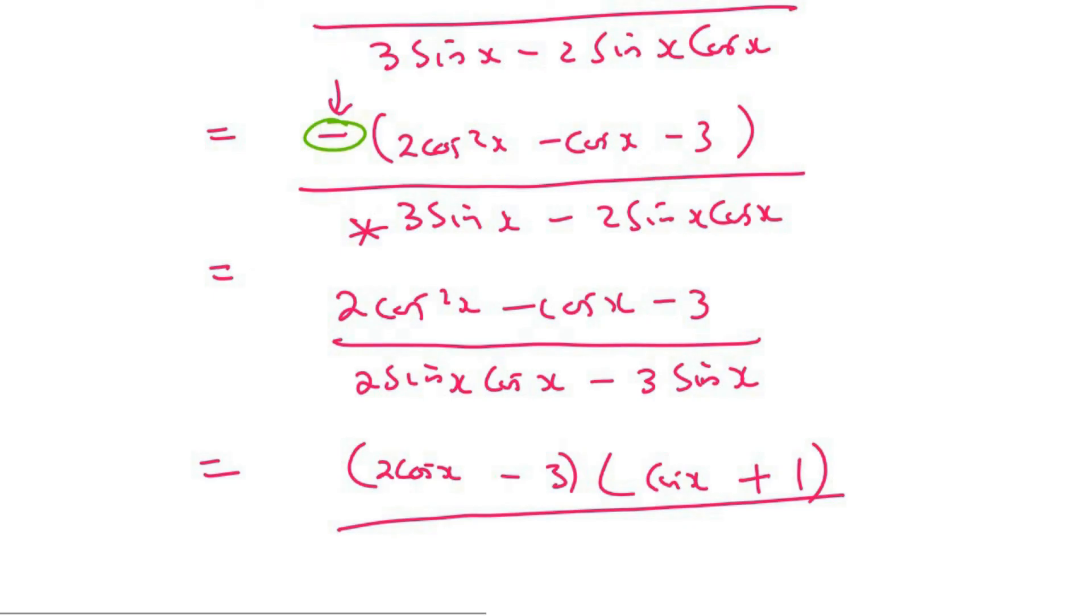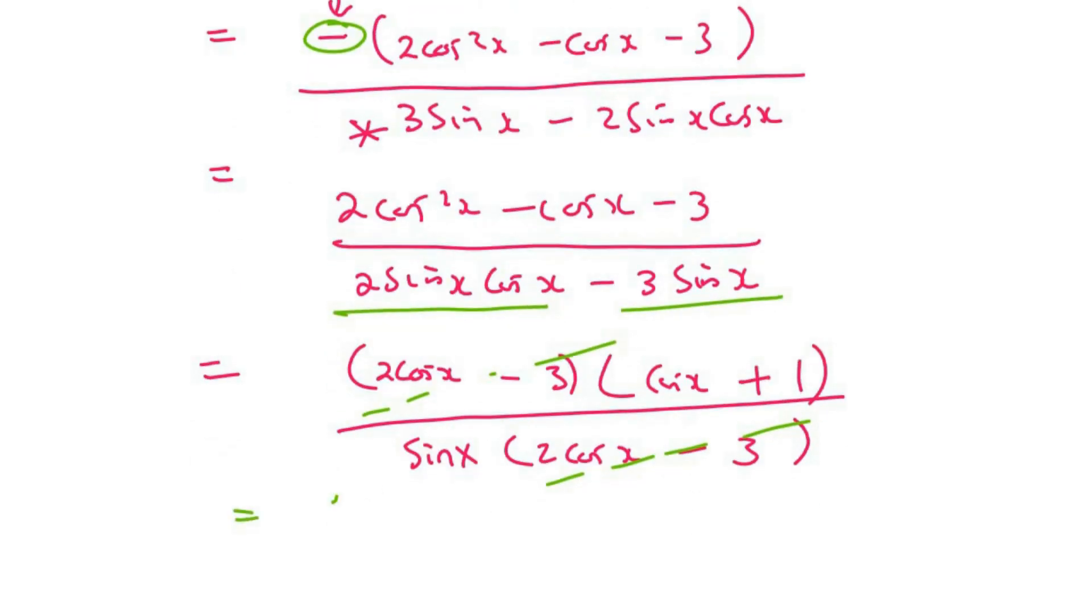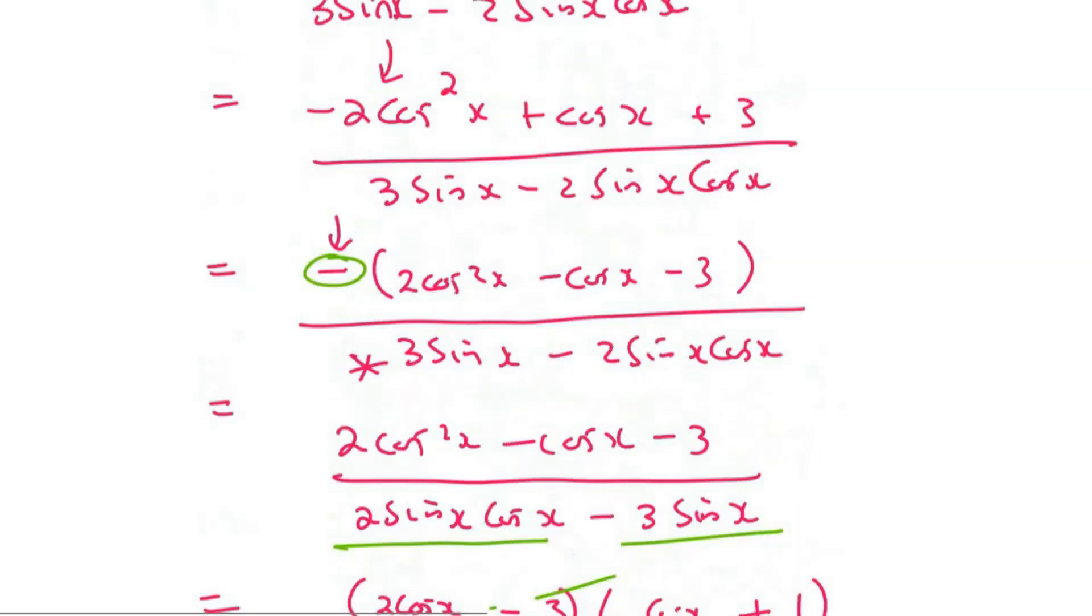Then at the bottom, there's a common factor. That common factor is sinx. And then we'd be left with 2 cosx minus 3. And then look at this. What happens is that that cancels, and that cancels. And so we're left with (cosx + 1) over sinx. And now we can say, therefore, left-hand side is the same as the right-hand side.